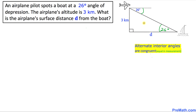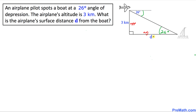One more thing: in this given right triangle, this side is called adjacent — A-D-J stands for adjacent — and this side is called opposite. And now our job is to find the value of d.